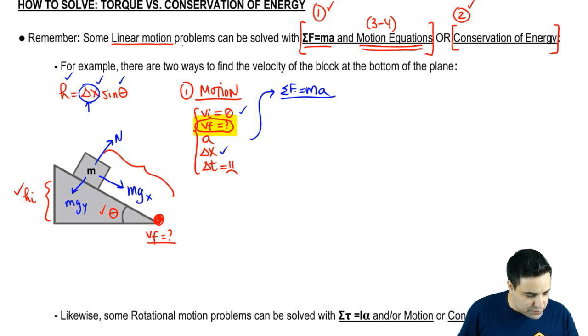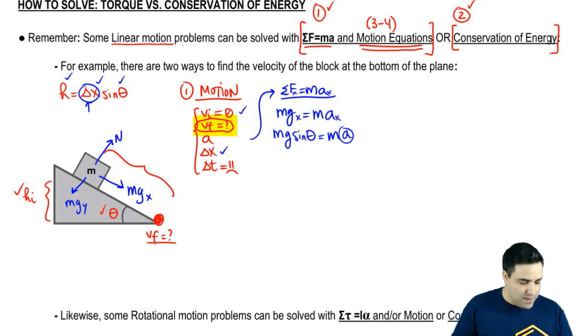mg will cancel with normal and there are no other forces. So when I write sum of all forces in the x-axis, I have mgx equals max. mgx is mg sine of theta equals ma. We're just going to call it a. The masses cancel and I'm left with an acceleration.